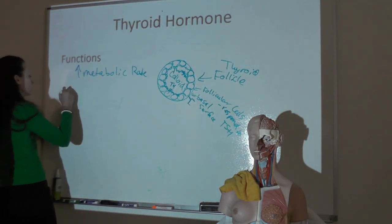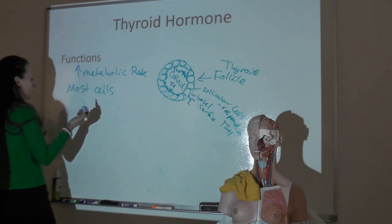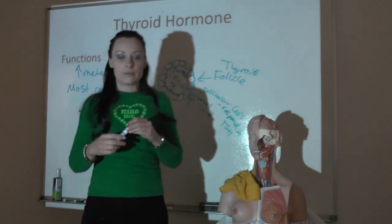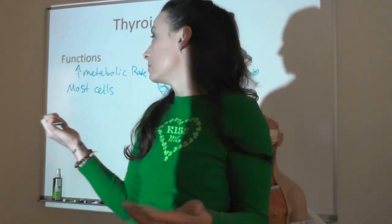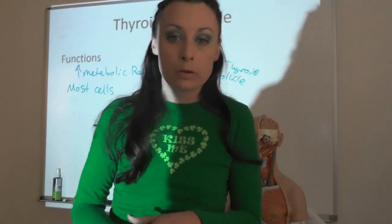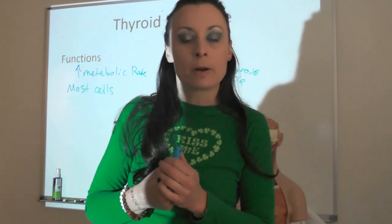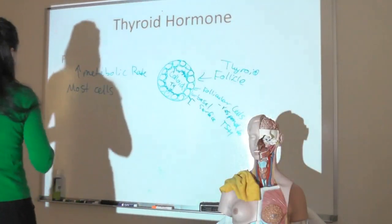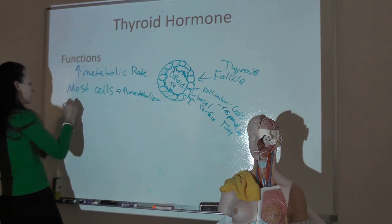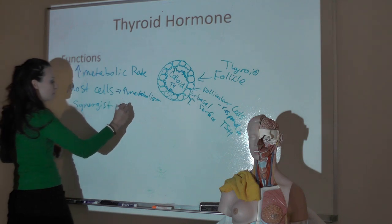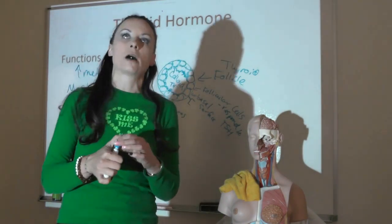Thyroid hormone targets most cells in the body, and its effect is to increase metabolism. Without normal thyroid hormone levels during nervous system development, you can have mental retardation and impairment. Thyroid hormone is also a very important synergist with growth hormone—when both are present together, they act synergistically to produce growth beyond what either would achieve alone.